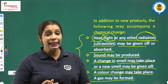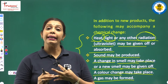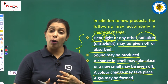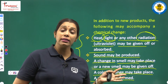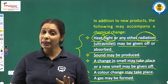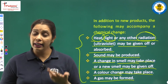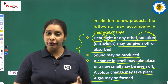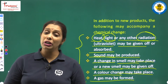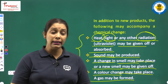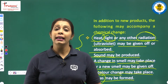So, in chemical changes, they are permanent and irreversible. Many new products may be formed — one or more. And once a product is formed, we cannot get the previous substance back. Along with chemical change, some heat, light, or any type of radiation may be absorbed or given off. During chemical changes, we also observe sound being produced. A smell can be changed or a new smell can be given off. And very importantly, a gas may be produced. Let us proceed.